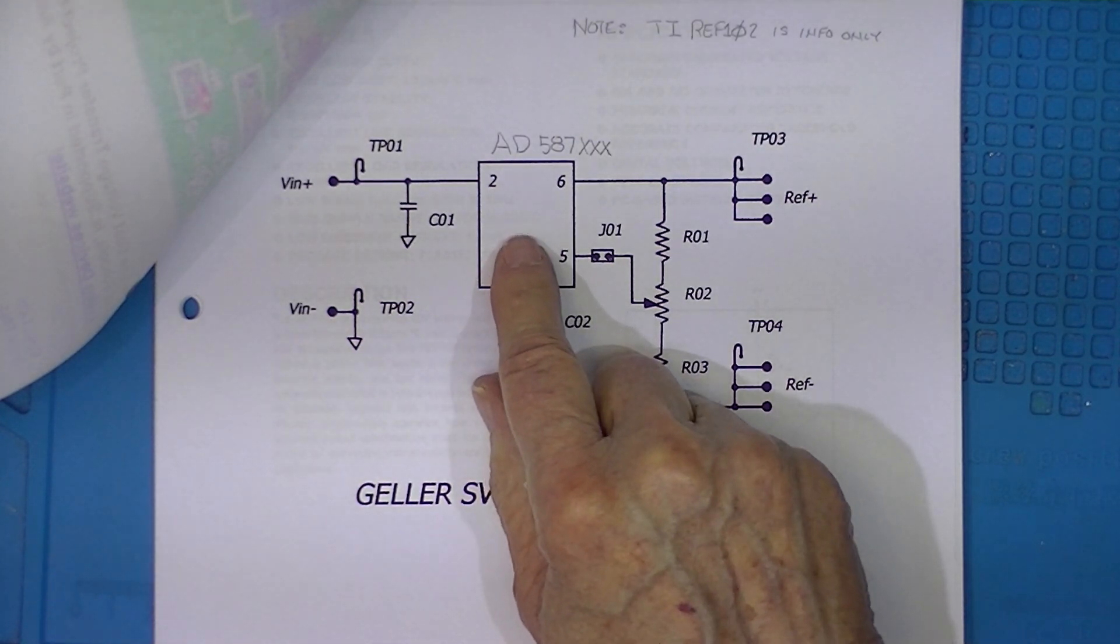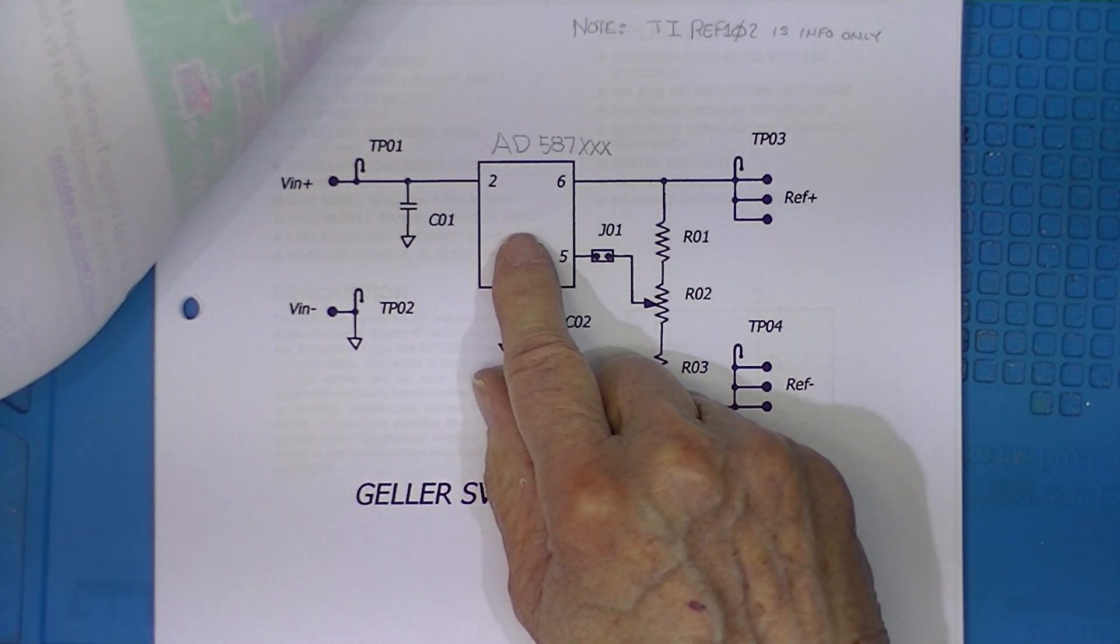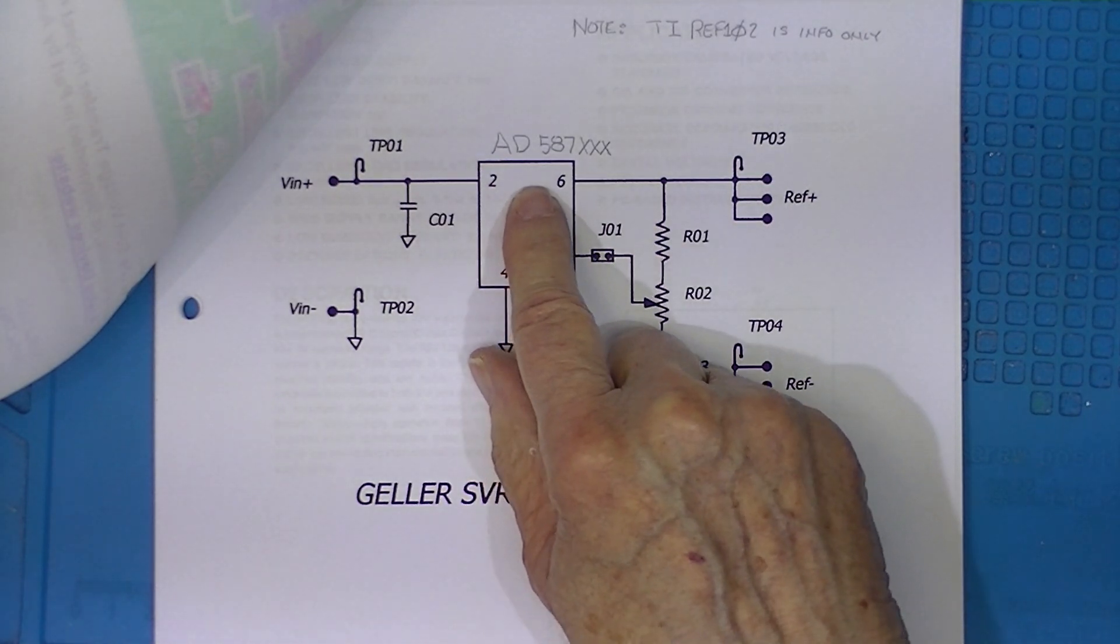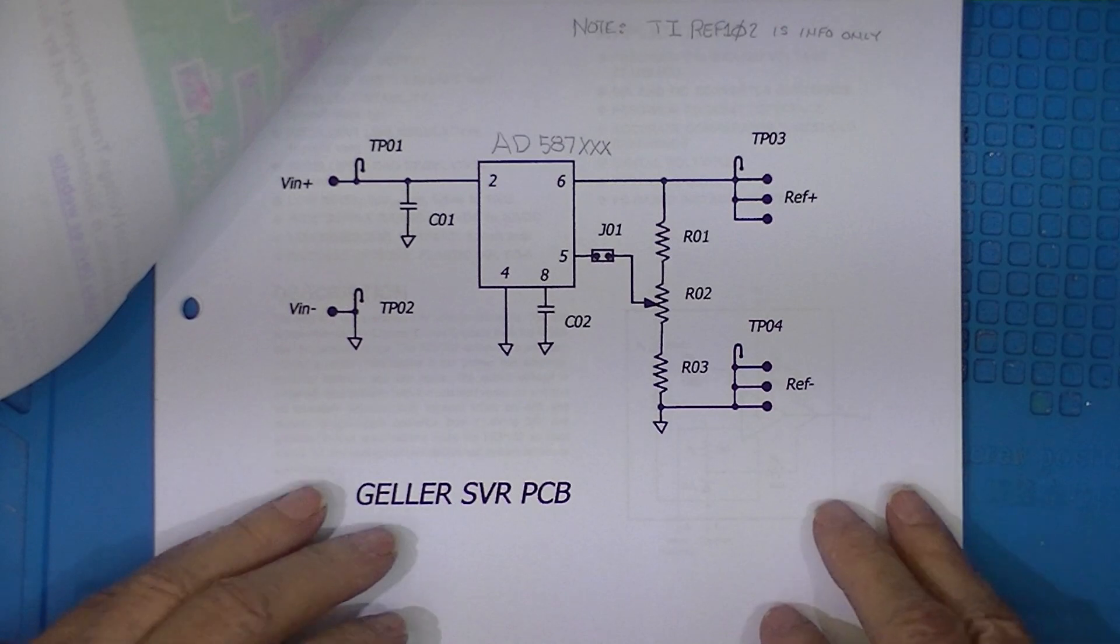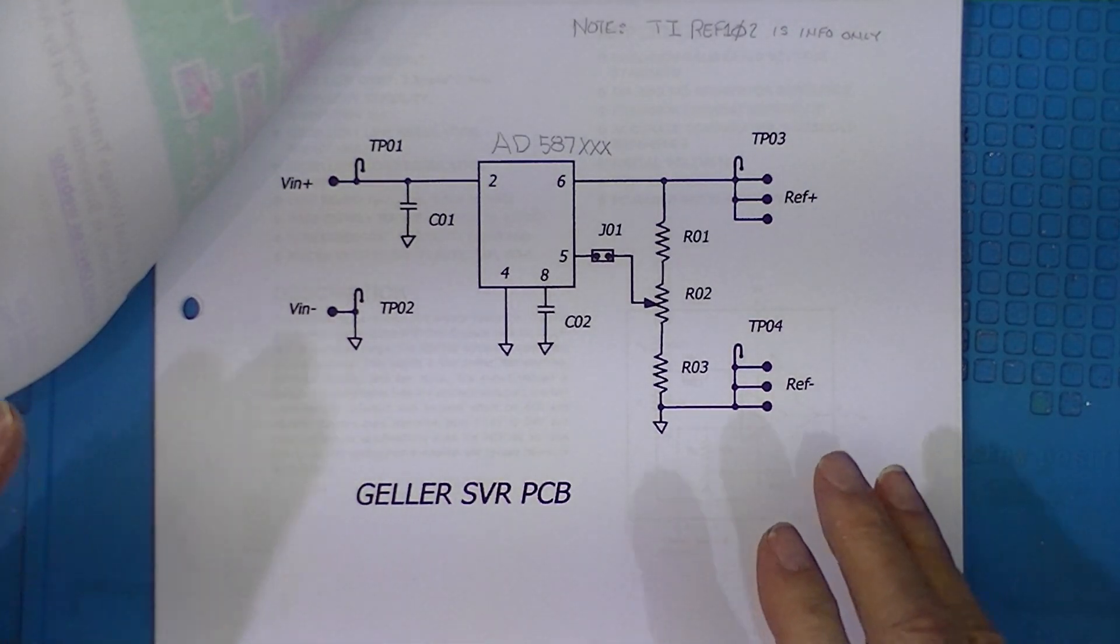These chips cost anywhere from a couple of bucks to a couple tens of bucks U.S. dollars. The higher priced ones are more accurate and more stable.